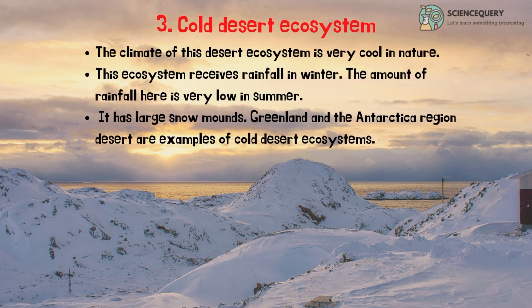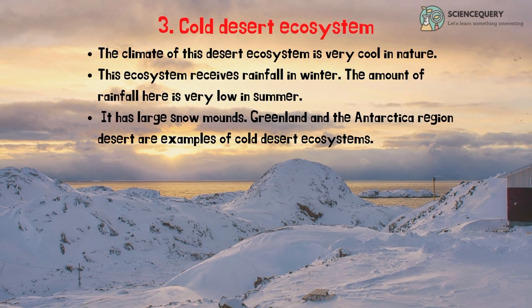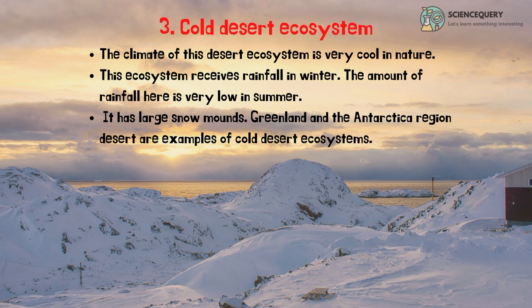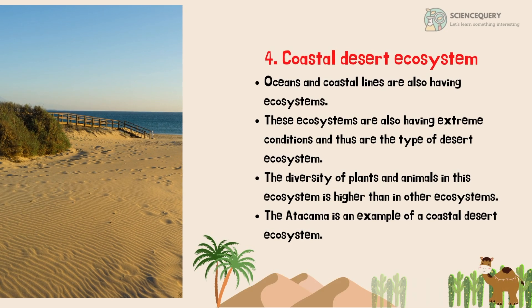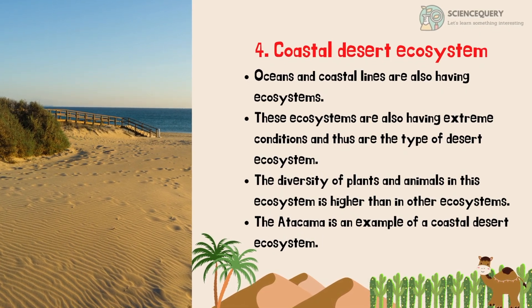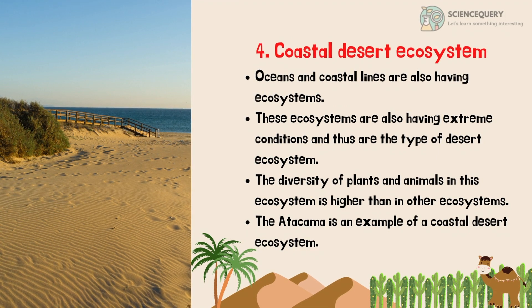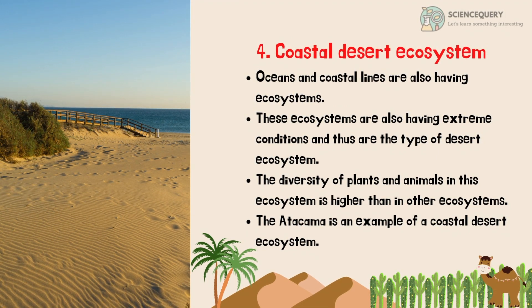The third type of desert ecosystem is the cold desert ecosystem. The climate of this desert ecosystem is very cool in nature. This ecosystem receives rainfall in winter and the amount of rainfall is very low in summer. It has large snow mounds. Greenland and the Antarctica region are examples of the cold desert ecosystem. The fourth type is the coastal desert ecosystem. Oceans and coastlines are also having ecosystems with extreme conditions. The diversity of plants and animals in this ecosystem is higher than in other ecosystems. The Atacama is an example of a coastal desert ecosystem.